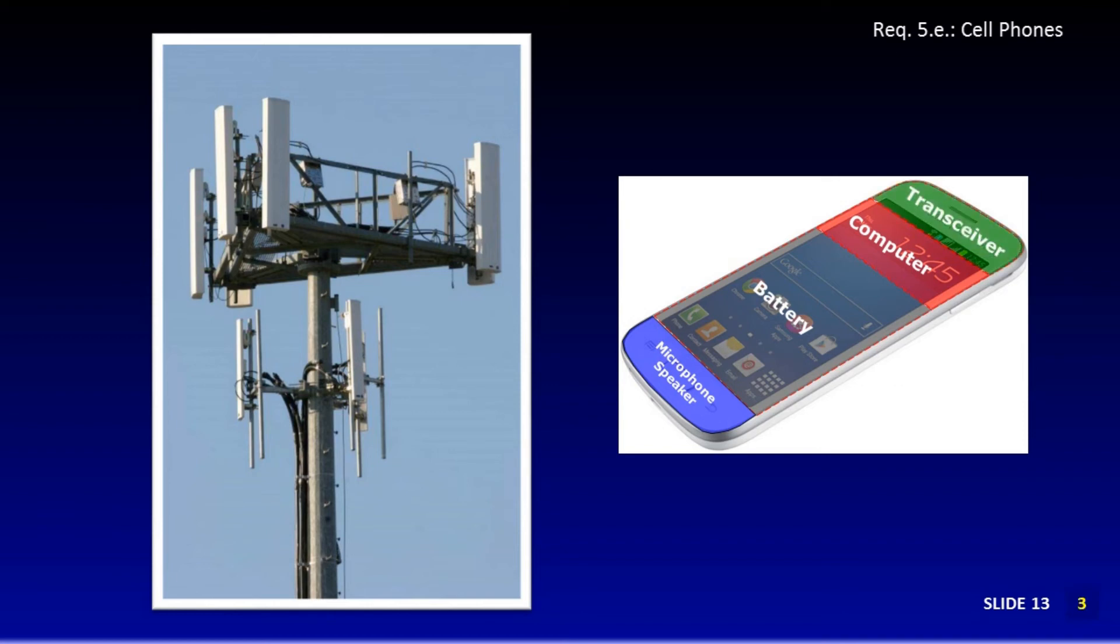The phone has a transceiver section, one that transmits and receives signals. Finally, no radio system would be complete without an antenna. Yes, cell phones have built-in antennas. Mobile phones have become more important for all things we do besides making a phone call.